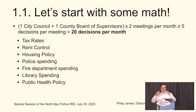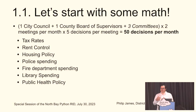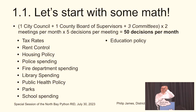Let's add what most of these groups also have, which is committees. Most of these groups are going to have at least three committees shared across city and county — and again, we're pretty low here. If it's just three committees, we're now up to 50 decisions per month. Now we're talking about parks, school spending, education policy, transportation — and that's still on the low end. You probably now see a couple things you care about affecting you.